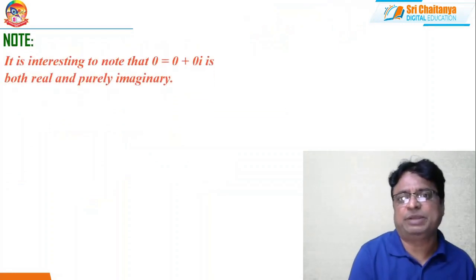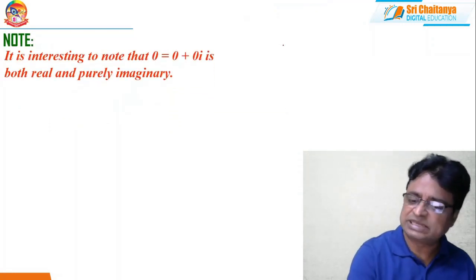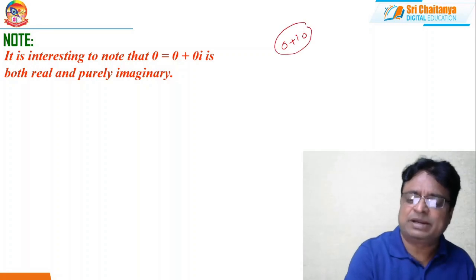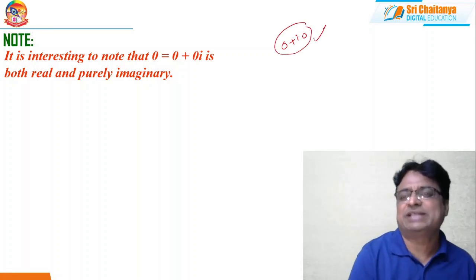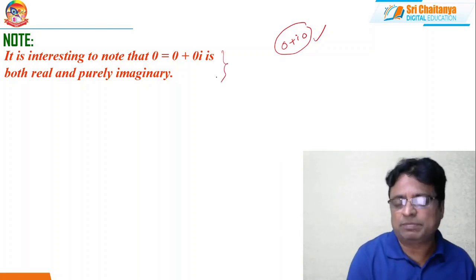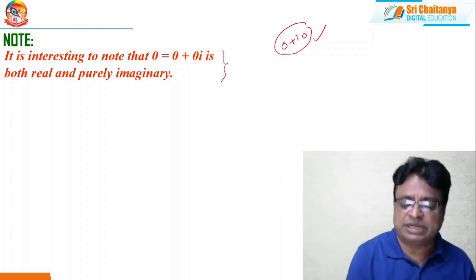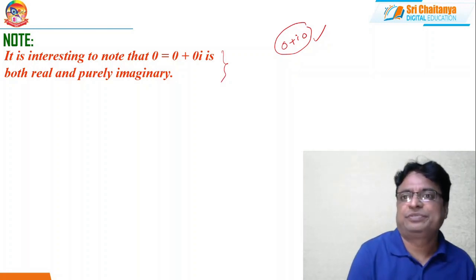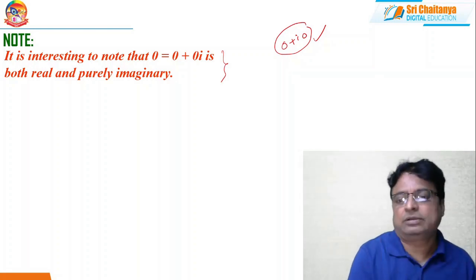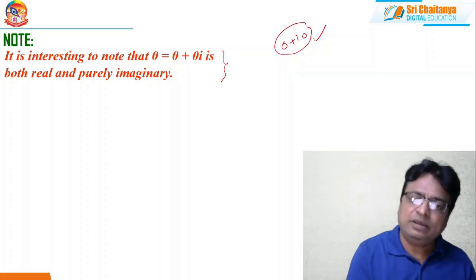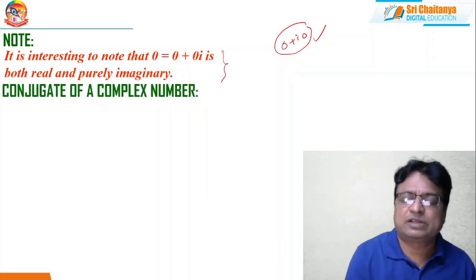Coming to the important note: as I mentioned in the last video also, 0 + i·0 is the only complex number that is both real and imaginary. Any complex number which is both purely real and purely imaginary is nothing but 0. This is the only number which is both real and imaginary. Because every real number is a complex number — in that aspect also we can say this.